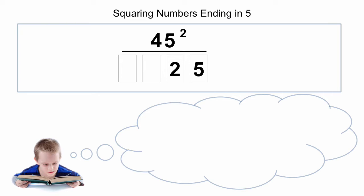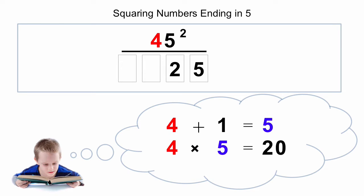To find the leading digits of the answer, we look at the tens digit — in this case the 4 — and we add one to it. So 4 plus 1 is 5. Now we take the original number and the new number and multiply them. So in this case it's 4 times 5, which is 20, and there we have our leading digits. So the answer of 45 squared is 2025.